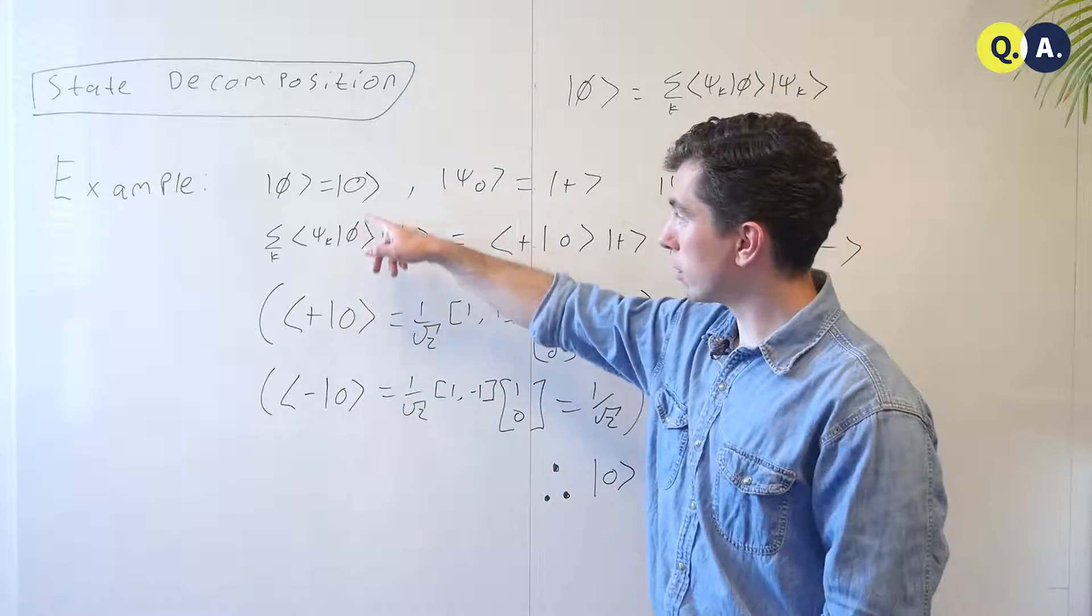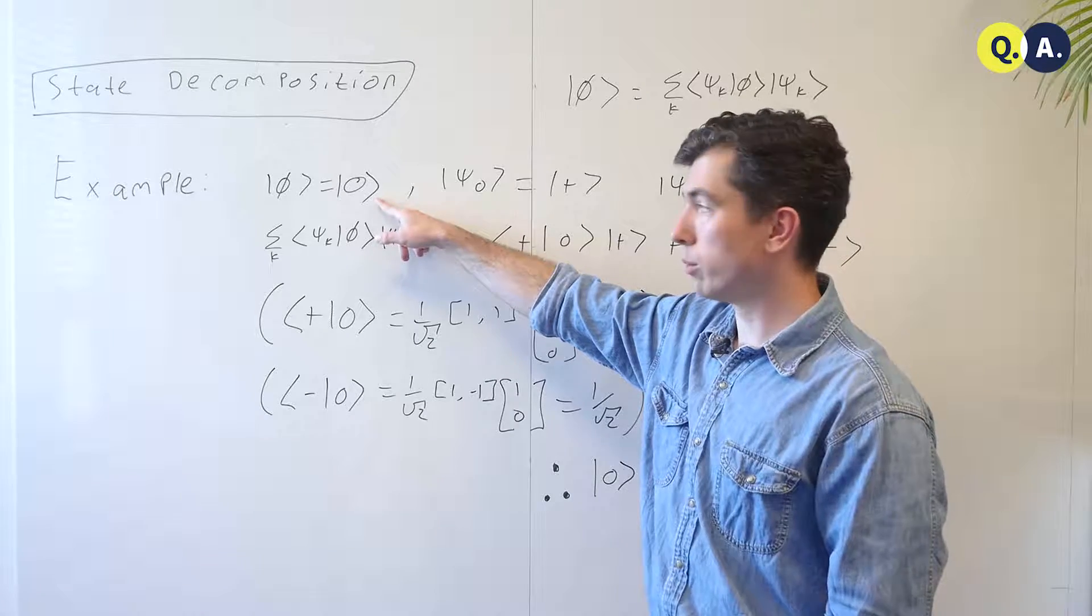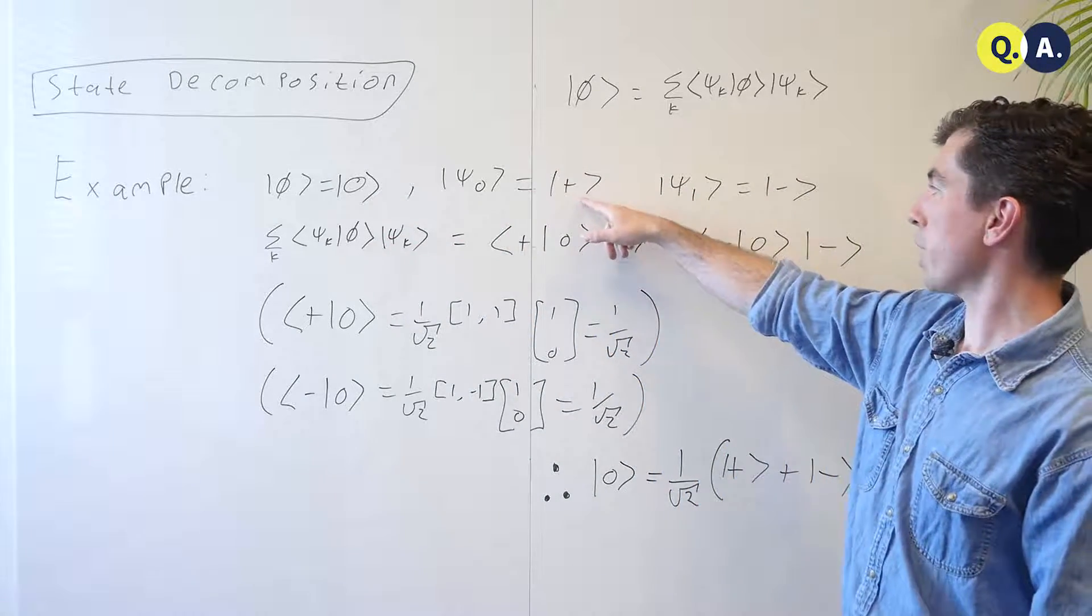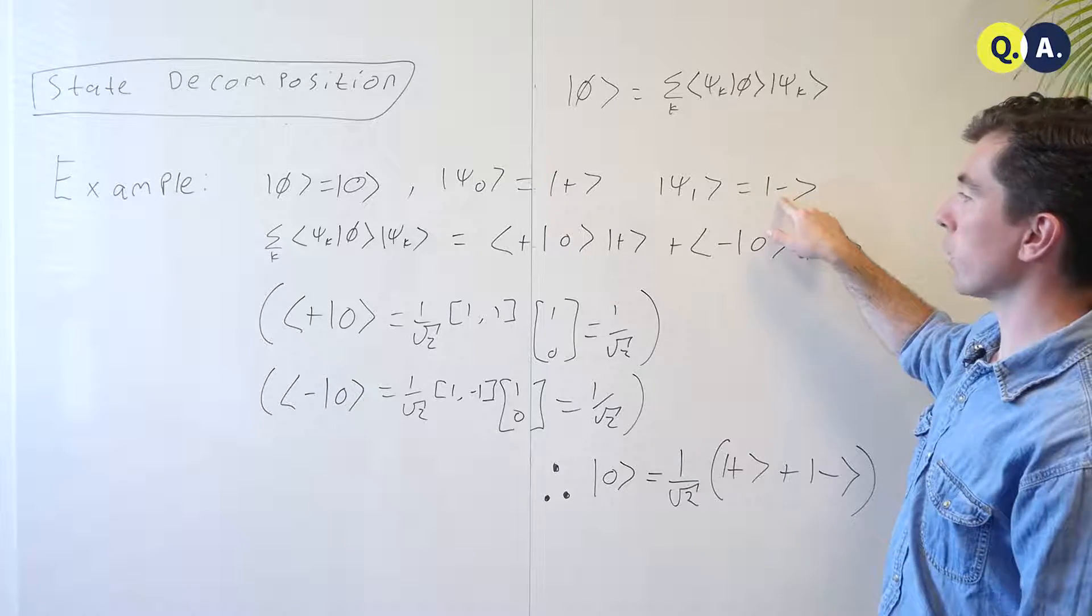As an example of this, let's take a look at a trial wave function of |0⟩ and the basis, which is the Hadamard basis, the plus minus basis, that we reviewed in the lecture.